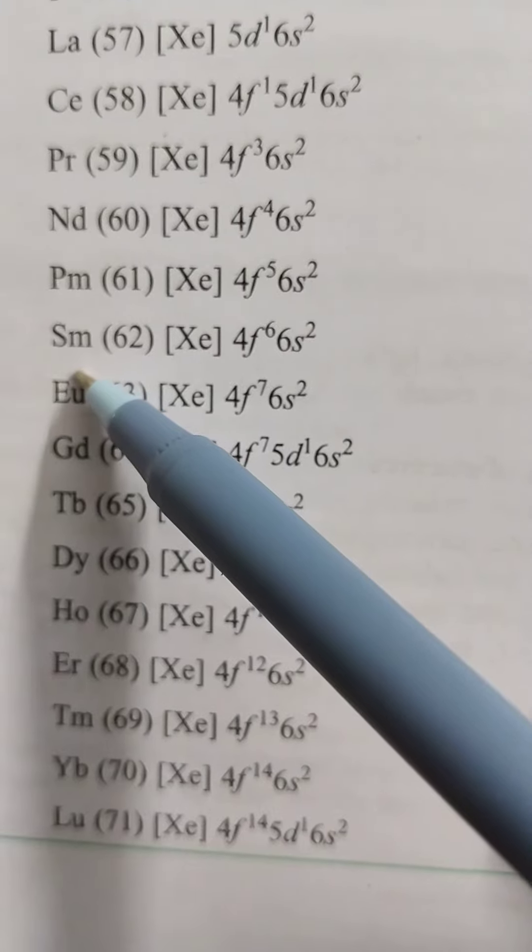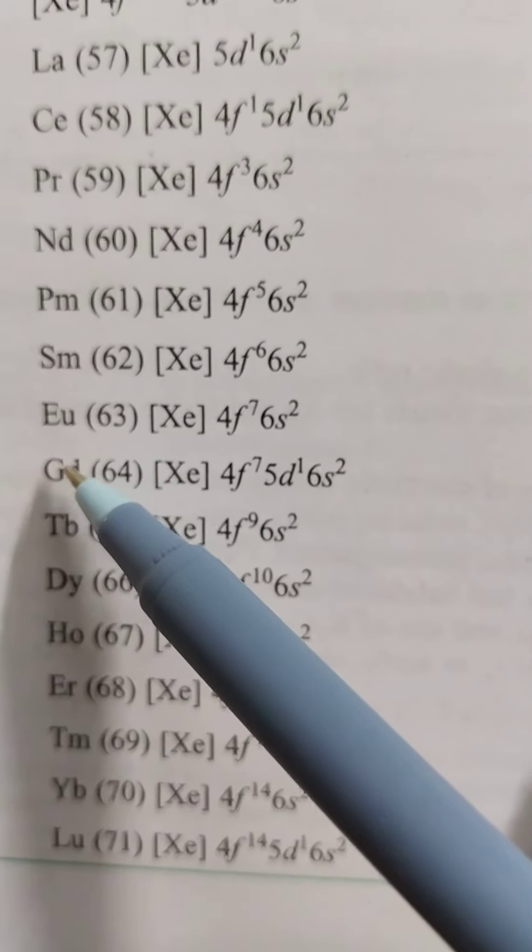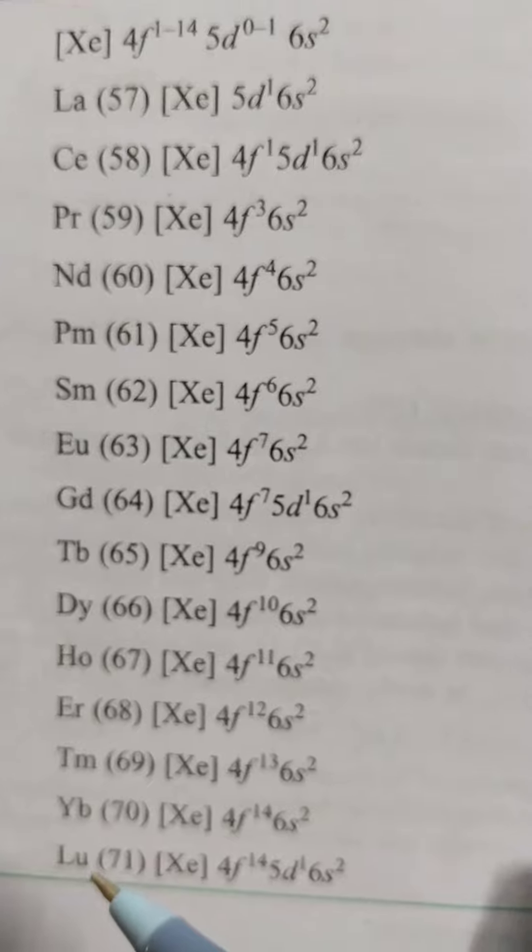Ytterbium+2 is more stable. Europium+2 is more stable. Gadolinium+3 is more stable.